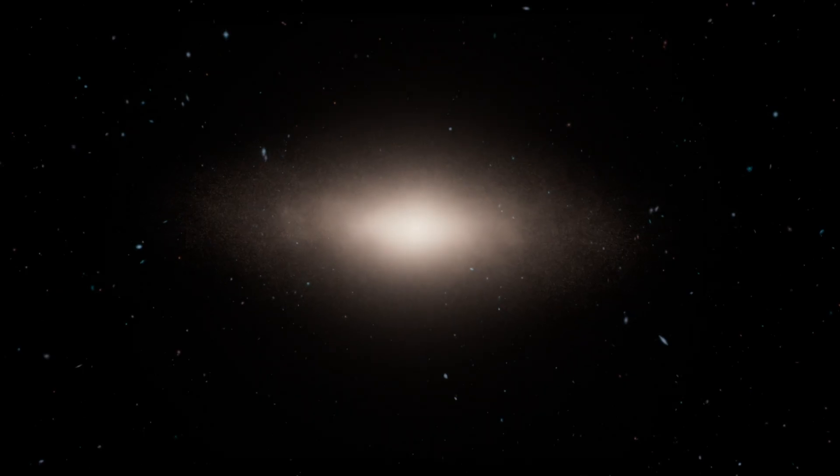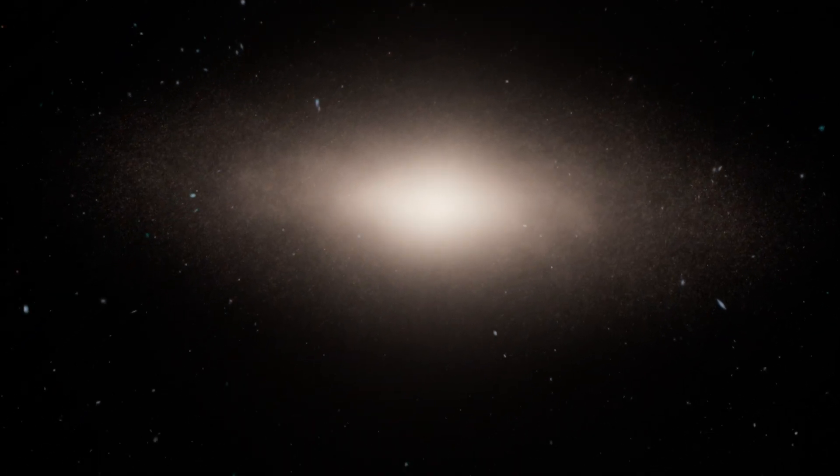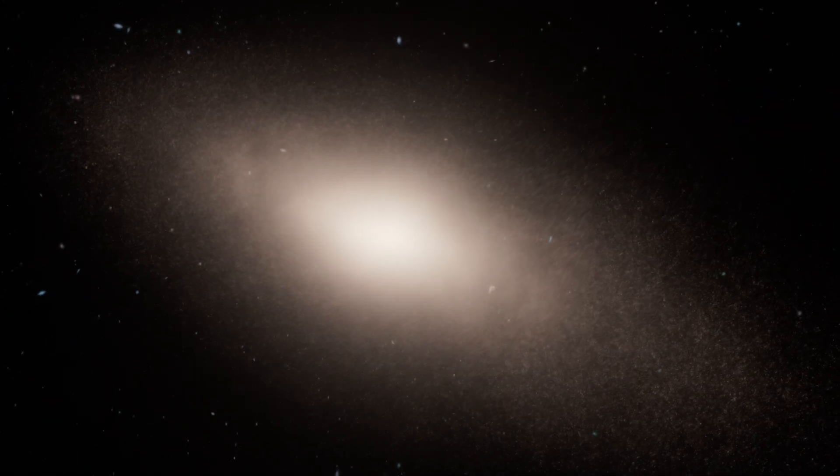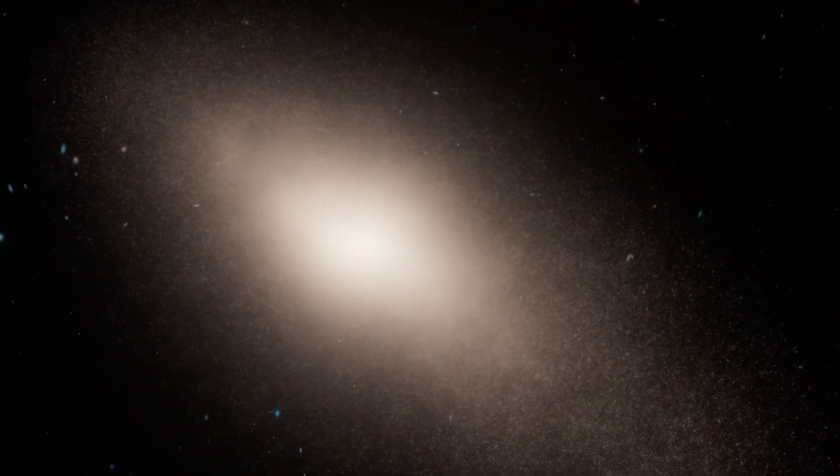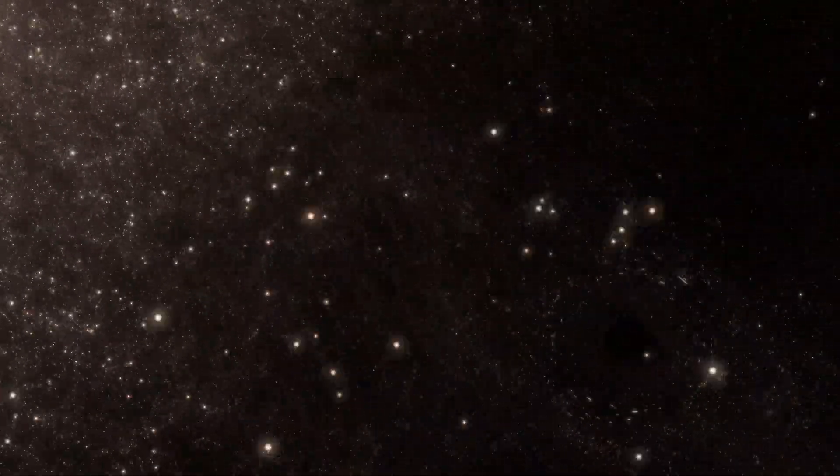Across the vastness of space lies a galaxy 600 million light years away. Within its starry depths resides something extraordinary, a supermassive black hole, one million times heavier than our Sun. Though nearly invisible, its immense gravity reveals itself subtly, bending the starlight around it in a phenomenon known as gravitational lensing.